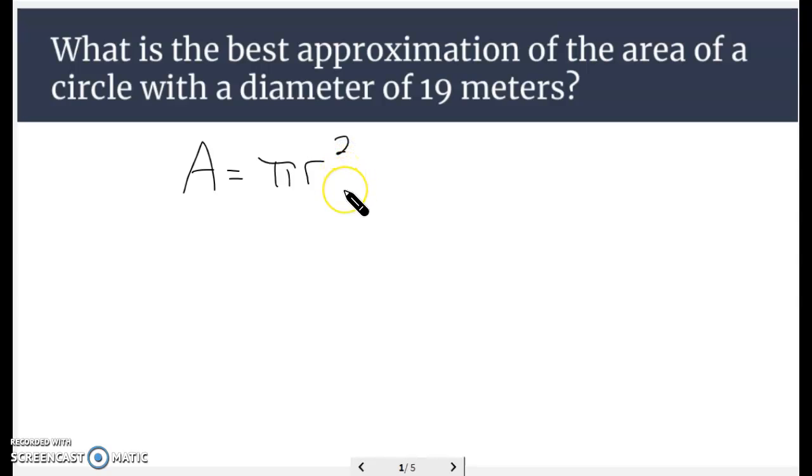So this question is asking, what's the best approximation for the area of a circle with a diameter of 19? Well, if the diameter is 19, that tells you the radius is 9.5. Remember, radius is always half the diameter.